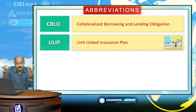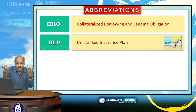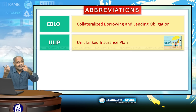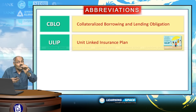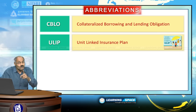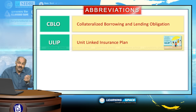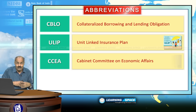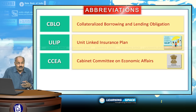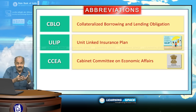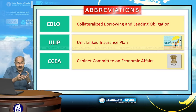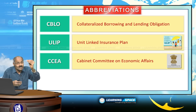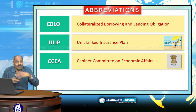ULIP is Unit Linked Insurance Plan. It combines not only insurance but also investment. When you combine both the properties of insurance and investment, it is called Unit Linked Insurance Plan. The regulator for ULIP is IRDAI, headquartered in Hyderabad. CCEA is the Cabinet Committee on Economic Affairs — for taking important decisions, some ministers in the union cabinet sit together. The Prime Minister is the chairman of CCEA.